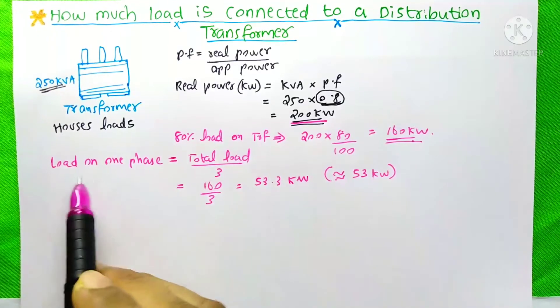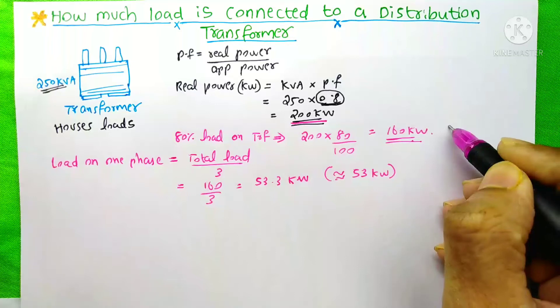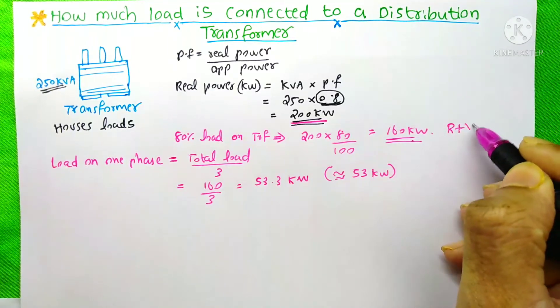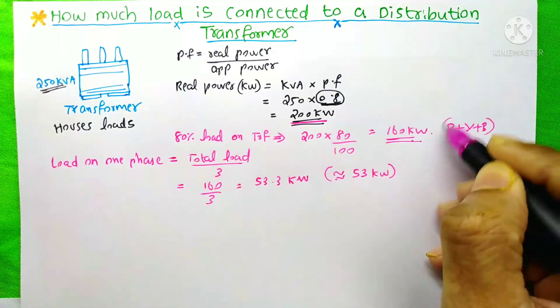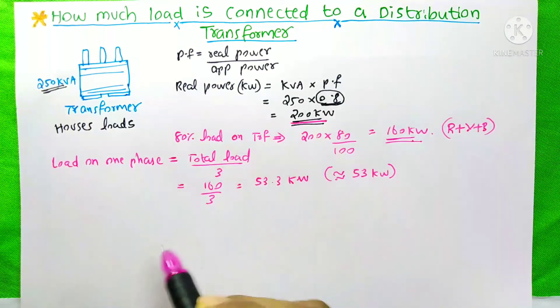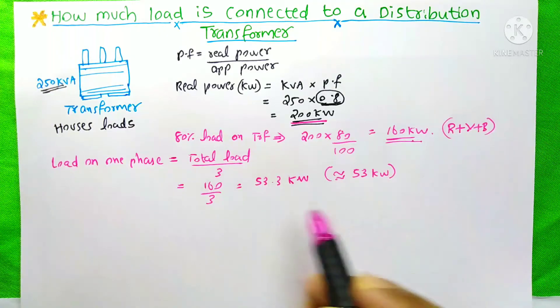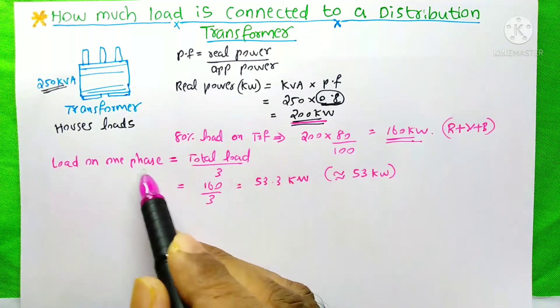Now we need to calculate load on one phase. This 160 kW is actually distributed to R, Y, and B phases. We need to find the load on each phase because small houses are actually on single phase.